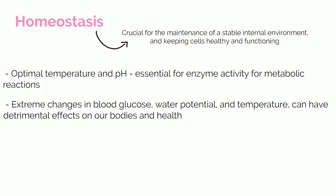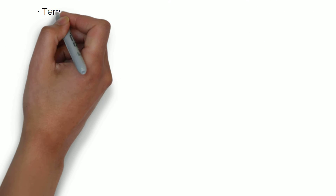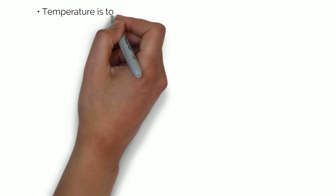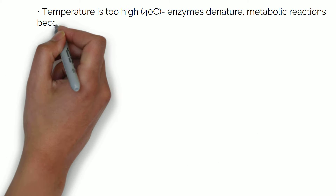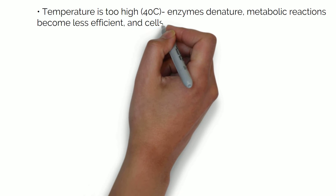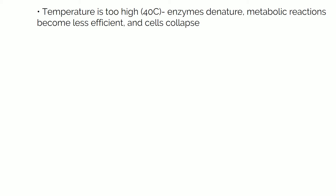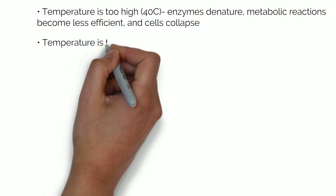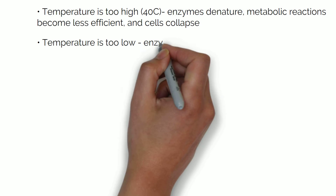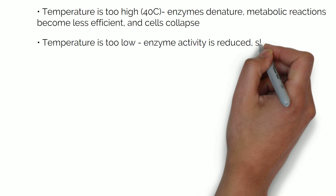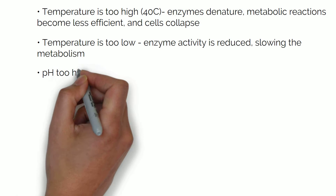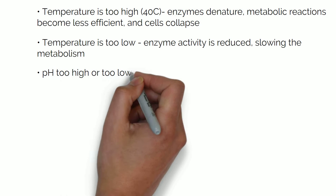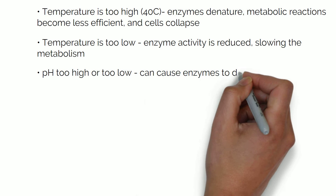Here are some examples. When temperature is too high, 40 degrees or higher, enzymes denature, metabolic reactions become less efficient and cells collapse. When temperature is too low, enzyme activity is reduced, slowing metabolism. pH being too high or too low can also cause enzymes to denature.